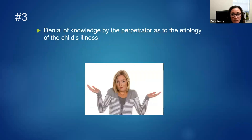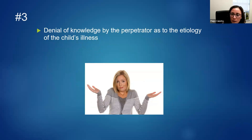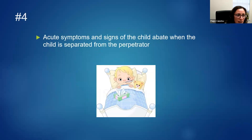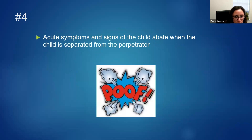The perpetrator — the caregiver — denies knowledge that this is happening. They don't know why the child is ill. They often come across as genuinely trying to help and wanting to do everything they can for their child. And finally, these symptoms go away when the child is separated from that caregiver who is causing the symptoms.